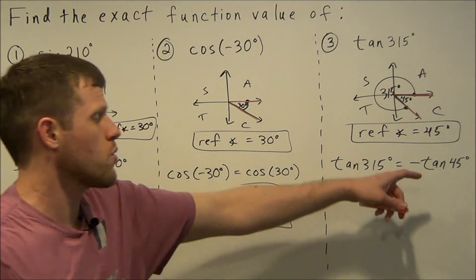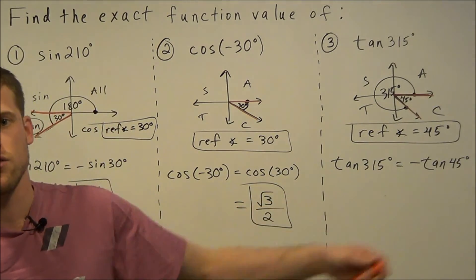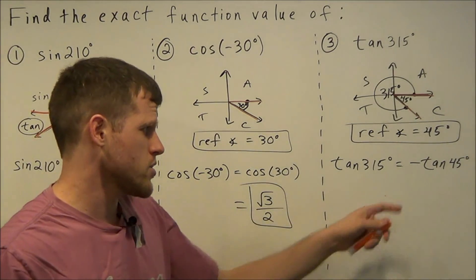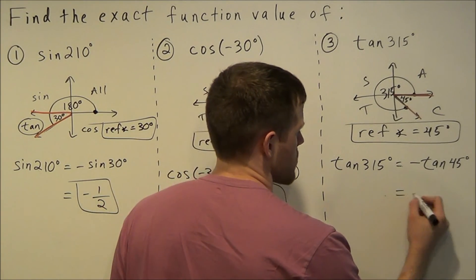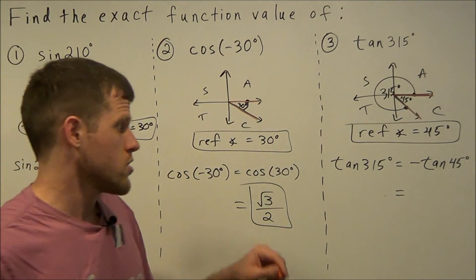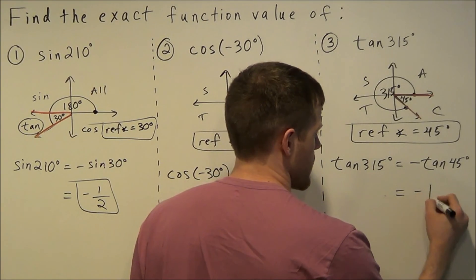To evaluate this using the special right triangles, you would use a 45-45-90 triangle, and using that triangle it would tell you tangent of 45 degrees is equal to 1. So we could simplify this as negative 1.